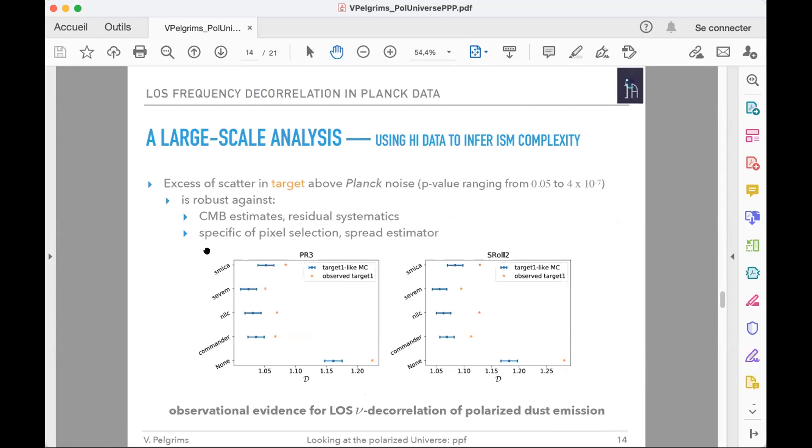This rejection is robust against different CMB estimates from the Planck collaboration, but also from different handling of residual systematics, including the third Planck release and new map-making full-sky maps.